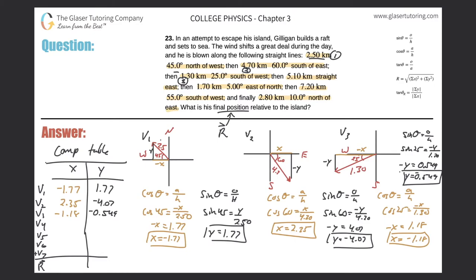Now V4: 5.10 km straight east. Draw a coordinate system. Straight east means the vector points entirely in the positive x direction, so there is only an x-component. Enter 5.10 in the x-column and 0 in the y-column for V4.